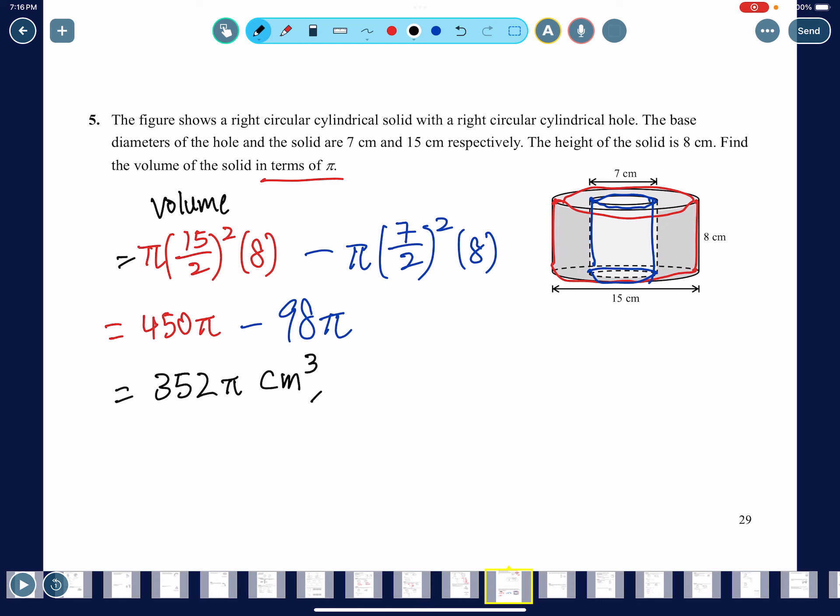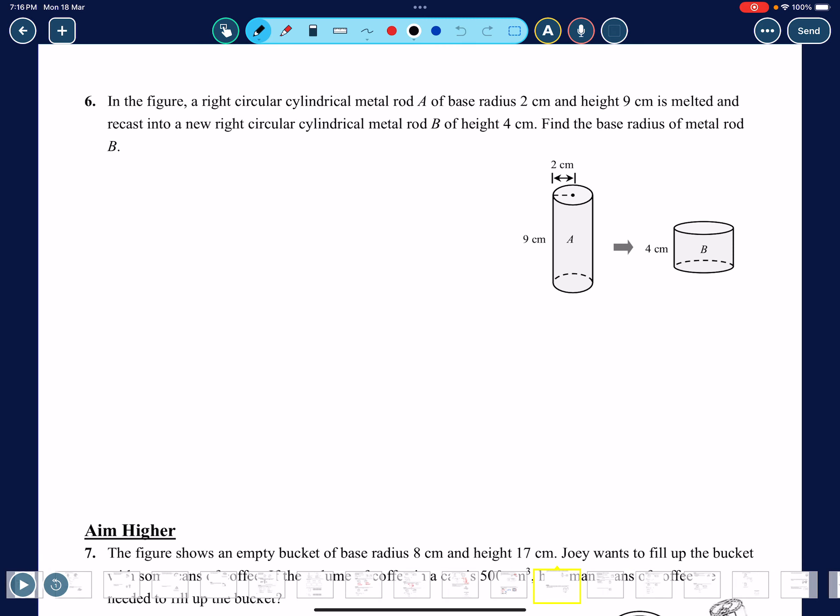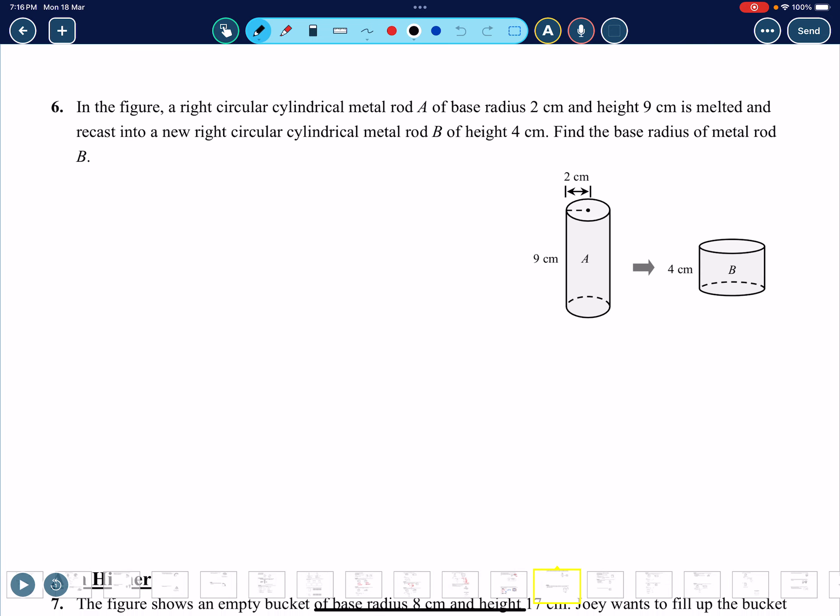Common question here. This one's also quite tough and quite common too. Now this one here, originally you have this shape, right? And then they melted it and turned it into this shape. So it's a different shape, same volume. Okay, this is one thing you need to know: same volume. So in order to find the radius of B, you need to know the volume of B, right? And you can get the volume of B because all the information are given for A. So volume is πr², π times 2² times 9.